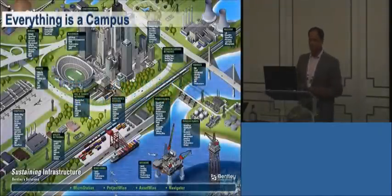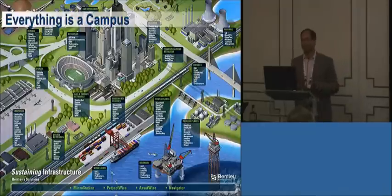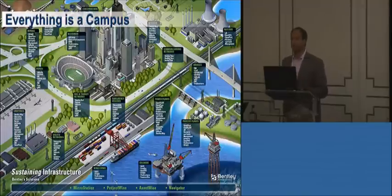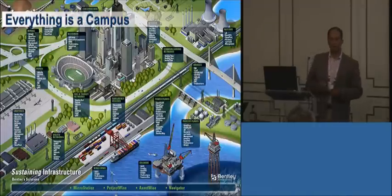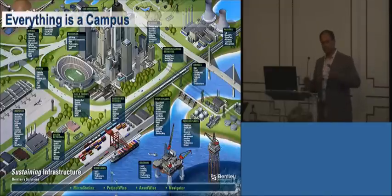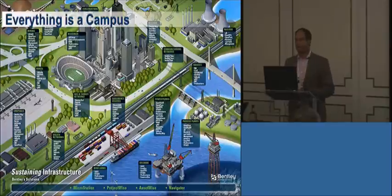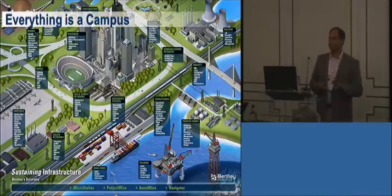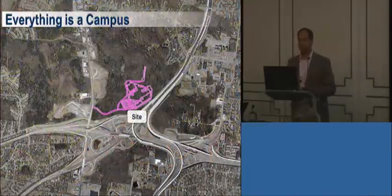You saw this slide before — Greg pointed out everything is a campus. Today we're going to look at how we're going to construct, design, and build a hospital building. That was the hospital building you saw Harry pull up on the iPad. It had a lot of different things going on: electrical, mechanical, structural, and civil underneath it. But before you even get to that, there's a whole bunch of stuff going on before you get to the asset itself.